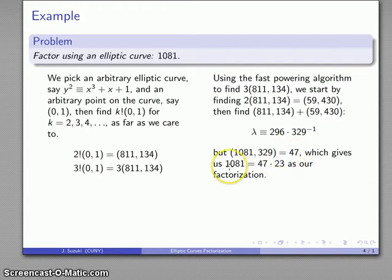And again, 1081 equals 47 times 23—that's our actual factorization. At this point, it's worth noticing something very interesting here: we found a factorization of 1081 in essentially two steps.